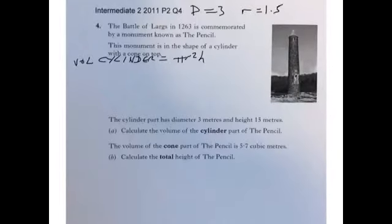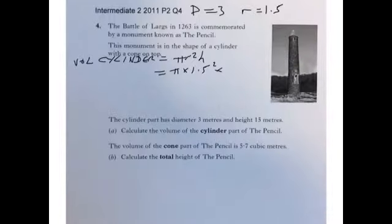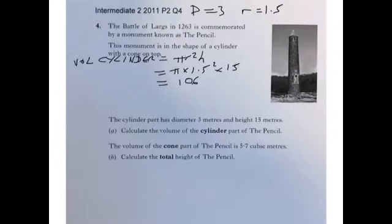Let's plug these values in. It's pi times 1.5 squared times the height of the cylinder, which is 15. If we work that out we get an answer of 106.02, which we could just round to 106 cubic metres. So that's the volume of the cylinder.